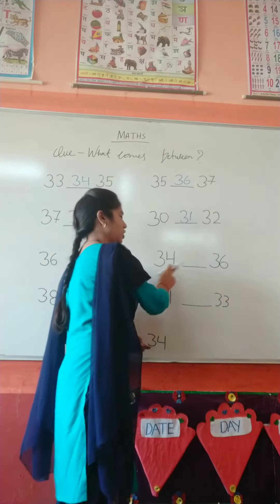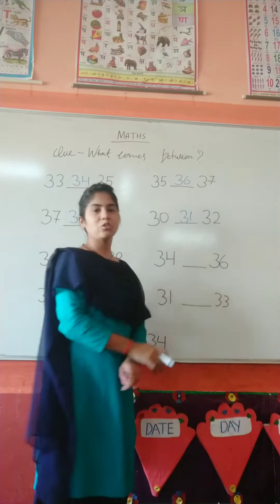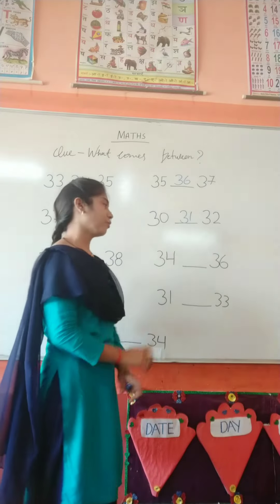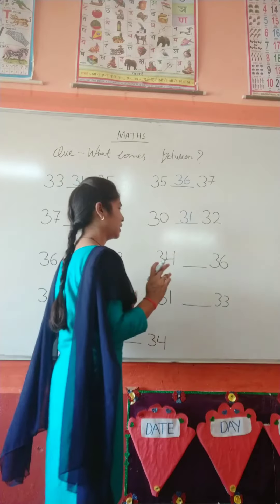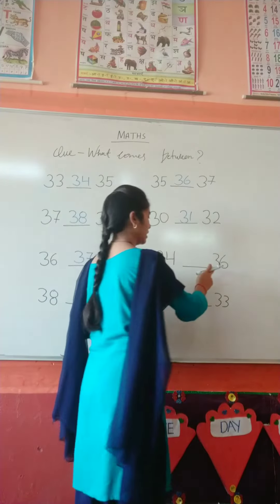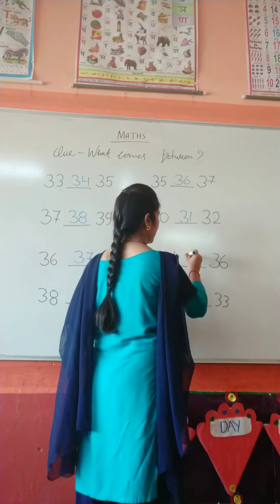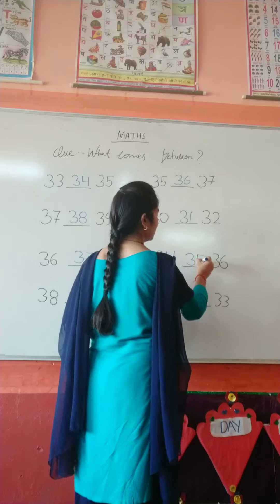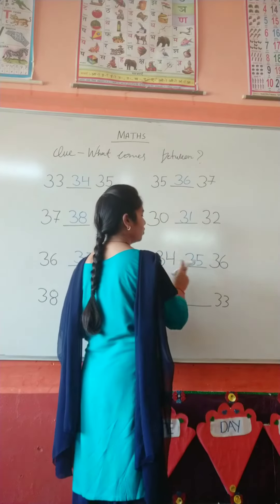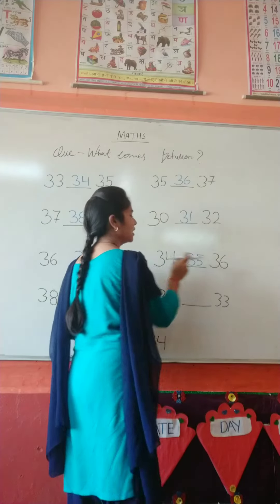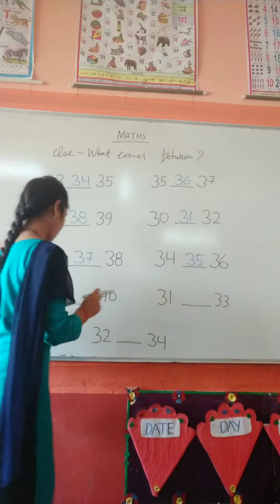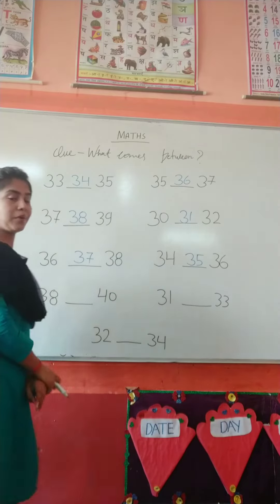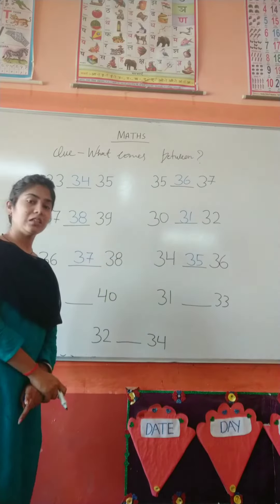Which number is this? Here is number 34. What comes between 34 and 36? 35. 34, 35, 36. Which number is this? Here is number 38.